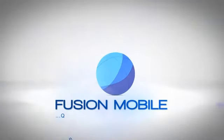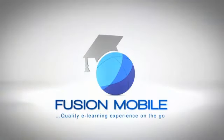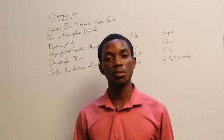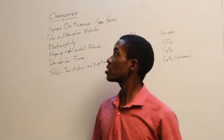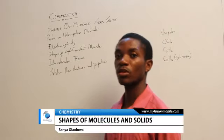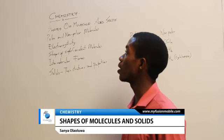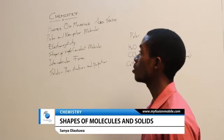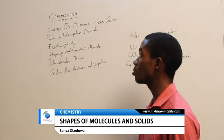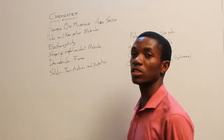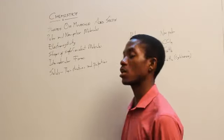Fusion Mobile — quality e-learning experience on the go. Welcome to Fusion Mobile e-learning clinic. My name is Sonia Laoloa and I'm guiding you through the Chemistry class. In today's lesson, we're going to consider the shapes of molecules and solids. We'll start with polar and non-polar molecules, then look at electronegativity, then consider shapes of simple covalent molecules, intermolecular forces, and conclude with solids — their structures and properties.